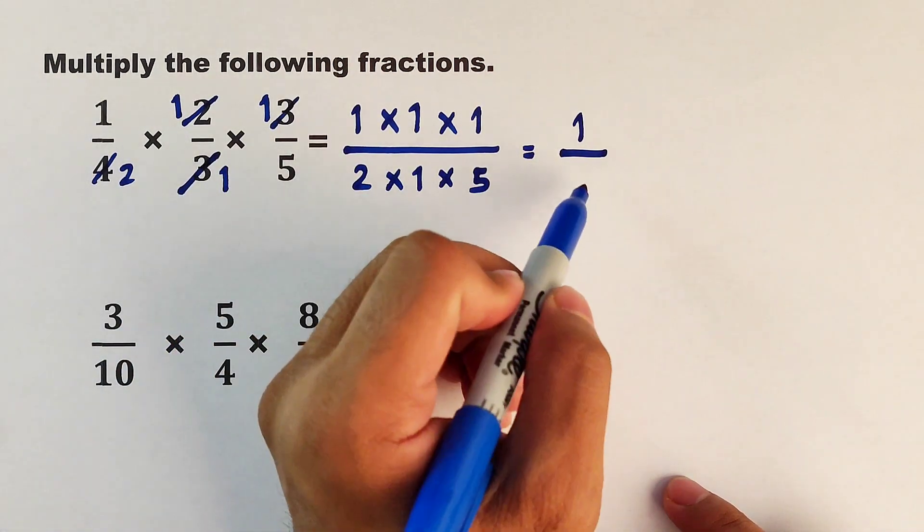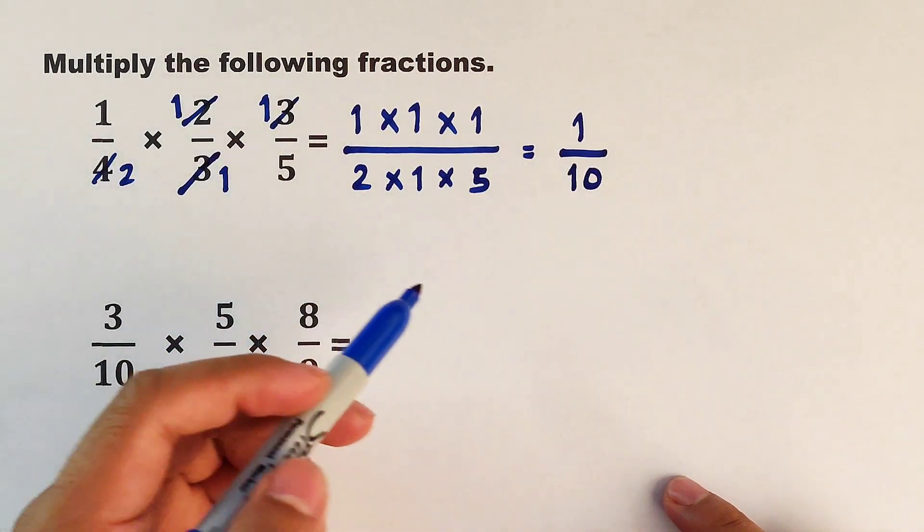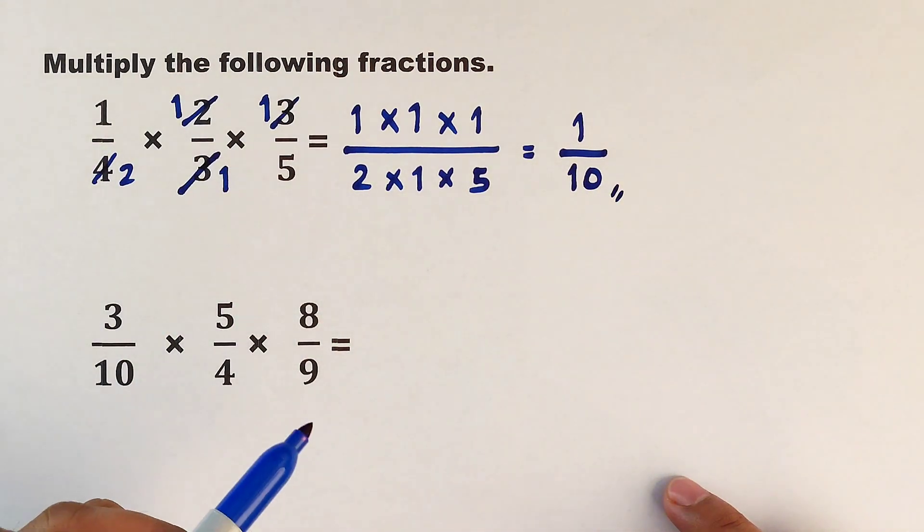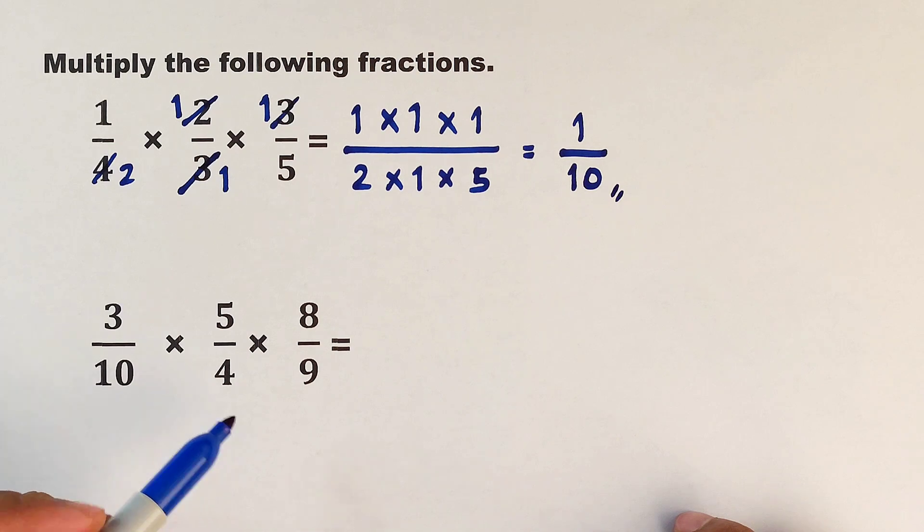And as you can see, the product between these three fractions is simply 1 over 10. Now we can pause the video for a while and let's try—you can try this second example.